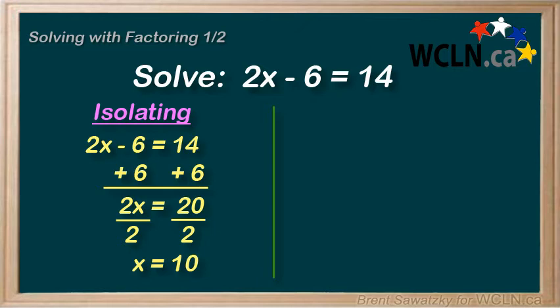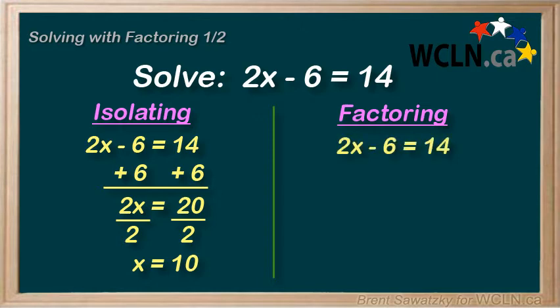Given that, let's take a look at another way to solve this same question. And we'll call this method our factoring method. And our first goal in this method is to get the right side of the equal sign equal to 0. So, to do this, we could subtract the 14 from both sides. On the left we now have 2x minus 20. And on the right we have 0. Perfect.